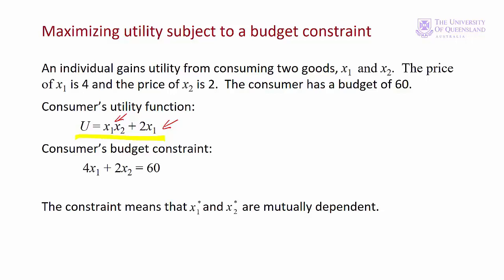Now our consumer has a budget of 60 dollars for coffee and cookies. Coffee is four dollars and a cookie is two dollars. The left hand side of the budget constraint shows the combination of coffees and cookies that our consumer can afford. The budget constraint means that the optimal values of x1 and x2 are not independent — they're mutually dependent.